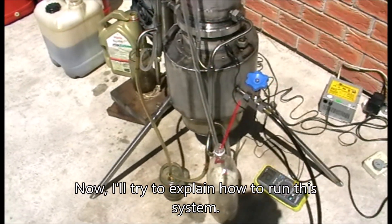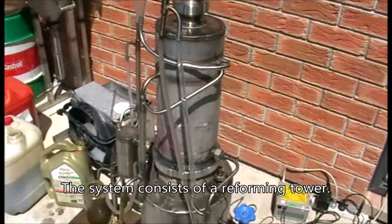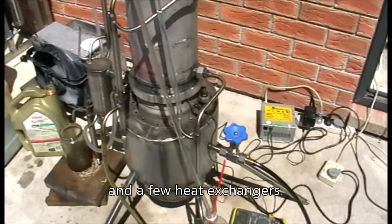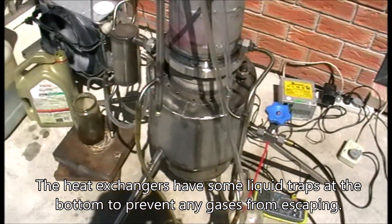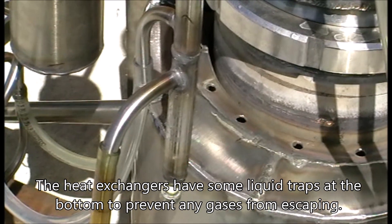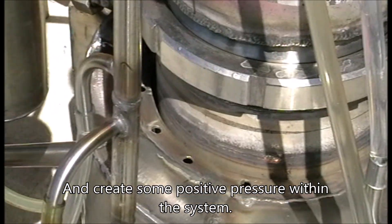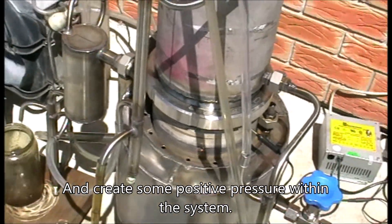Now I'll try to explain a bit how to run this system. The system consists of a reforming tower, a few heat exchangers. Heat exchangers got some liquid traps at the bottom to prevent any gases from escaping, so to create some kind of positive pressure within the system.